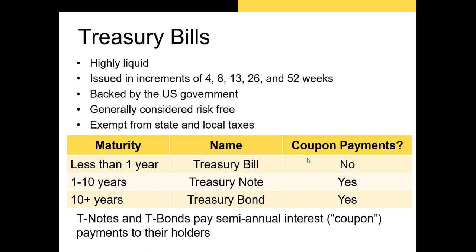T-bills are arguably one of the most liquid assets in the world today, with trillions of dollars of them outstanding. They're issued by the U.S. federal government to pay for national defense, Medicare, Medicaid, and all the discretionary spending the federal government might incur over a year. T-bills have at least five different maturities: 4, 8, 13, 26, and 52 weeks, which correspond to one-month, two-month, three-month, six-month, and one-year T-bills.